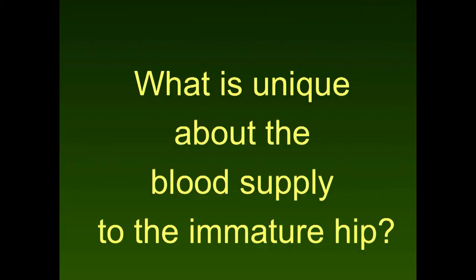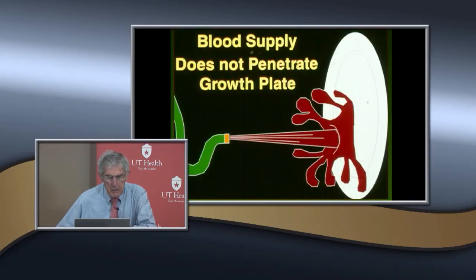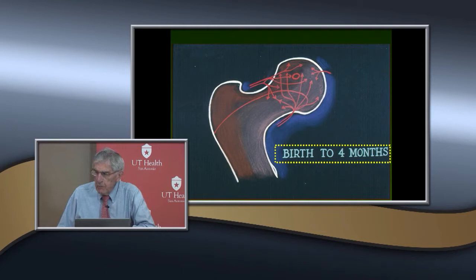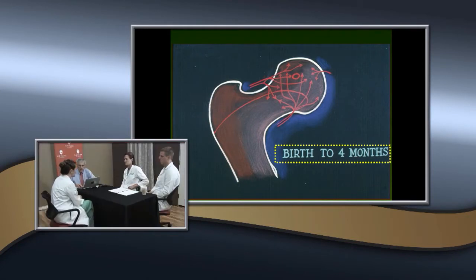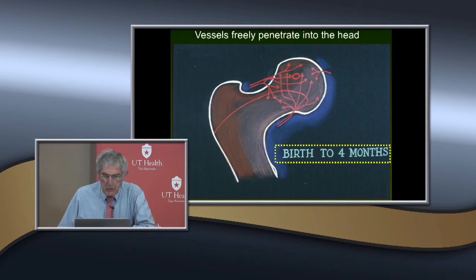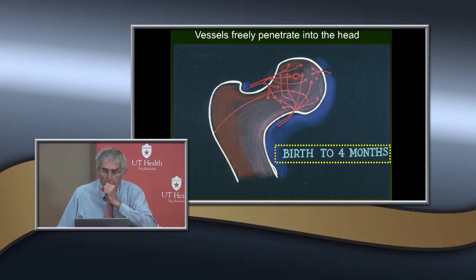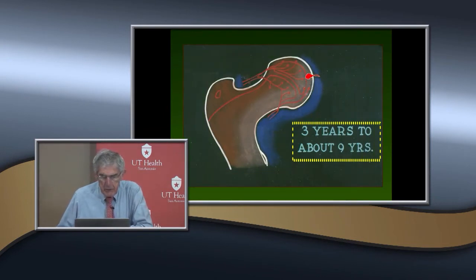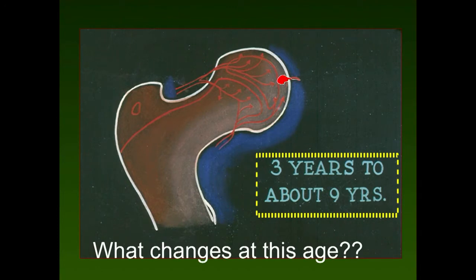The blood supply makes a real difference. Remember, blood supply does not penetrate the growth plate. In the early infant, there's no barrier and vessels penetrate freely into the head up to about four or five months — so there's a really good blood supply in the small infant. After about three years of age, two separate ossification centers form a true physeal plate, which serves as a barrier to blood flow.